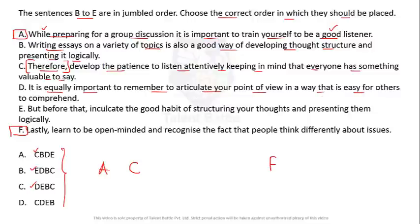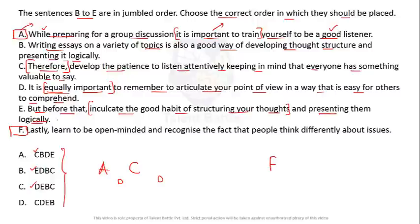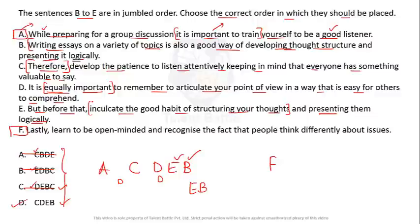Sentence D says 'it is equally important to remember to articulate your point of view in a way that is easy for others to comprehend.' Since statement A mentions something important and D says 'equally important,' D can come after A or after C. Sentence E says 'inculcate the good habit of structuring your thoughts and presenting them logically,' and B says 'writing essays is a good way of developing thought structure' — so B comes after E.